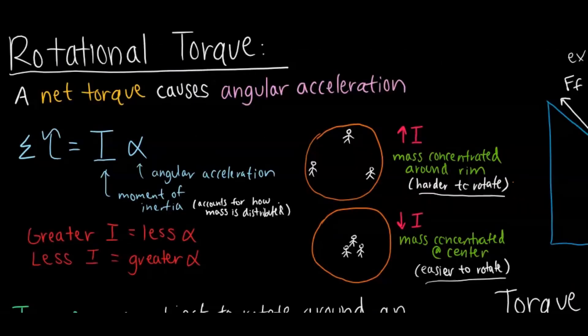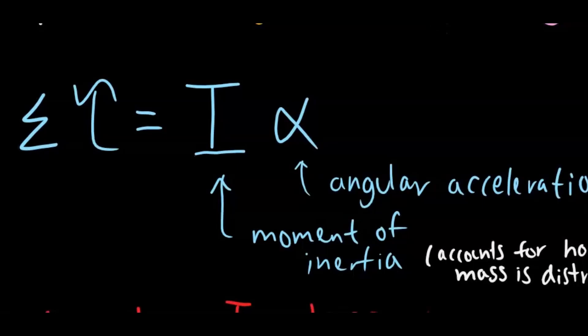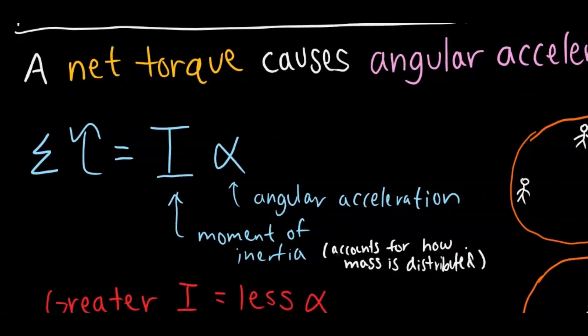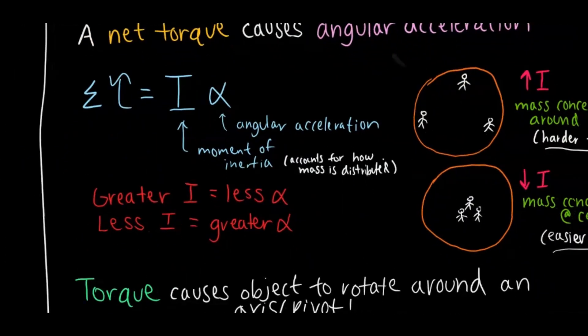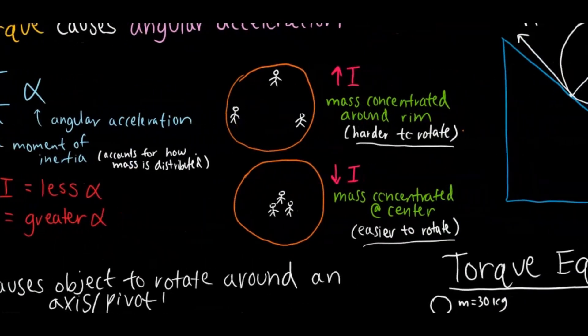The next big topic is rotational torque, which connects with forces and dynamics. A net torque is going to cause angular acceleration. The equation is: net torque equals moment of inertia times angular acceleration — very similar to net force equals ma. Moment of inertia is like mass, except it accounts for how mass is distributed. A greater moment of inertia leads to less angular acceleration given the same torque, and vice versa.